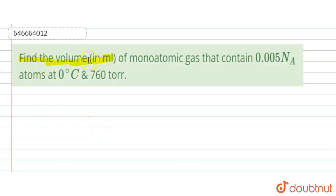So here the question is: find the volume in ml of monoatomic gas that contains 0.005 N_A atoms at 0 degree Celsius and 760 torr.